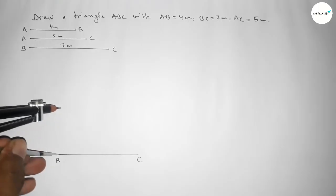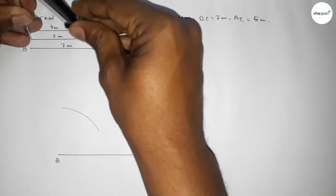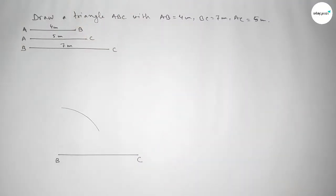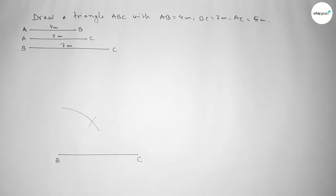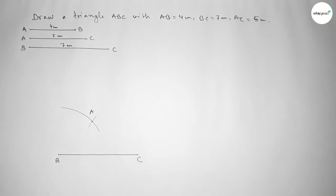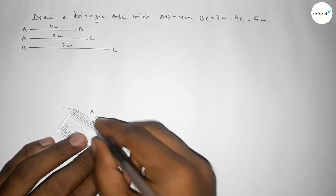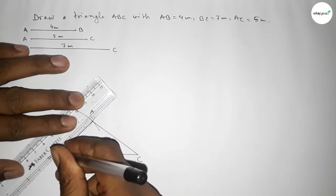Putting the compass on point B and drawing an arc. Then taking the length AC equal to 5 centimeters using the compass, putting the compass on point C and cutting an arc. Both arcs intersect at a point, which we take as point A.